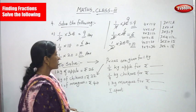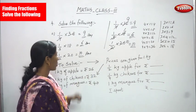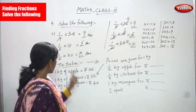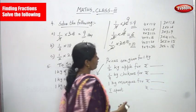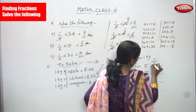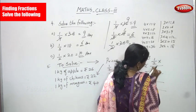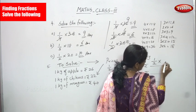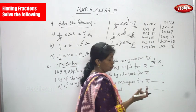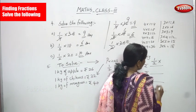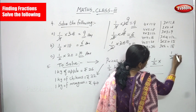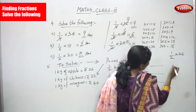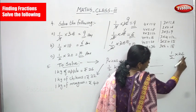We have to find the price of half kg of apple. Half kg means 1/2. So 1 kg of apple is 26 rupees, but we have to find the price for half kg. That means: 1/2 × 26.